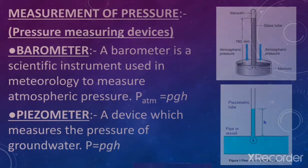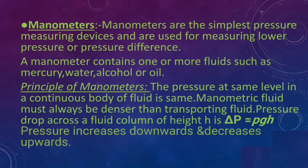Manometers are the simplest pressure measuring devices, used for measuring lower pressure or pressure differences. A manometer contains one or more fluids such as mercury, water, alcohol, or oil. The principle behind the manometer: pressure at the same level in a continuous body of fluid is the same; the manometric fluid must always be denser than the transporting fluid; pressure drop across a fluid column of height h is Δp = ρgh; pressure increases as the fluid moves downward and decreases as it moves upward.